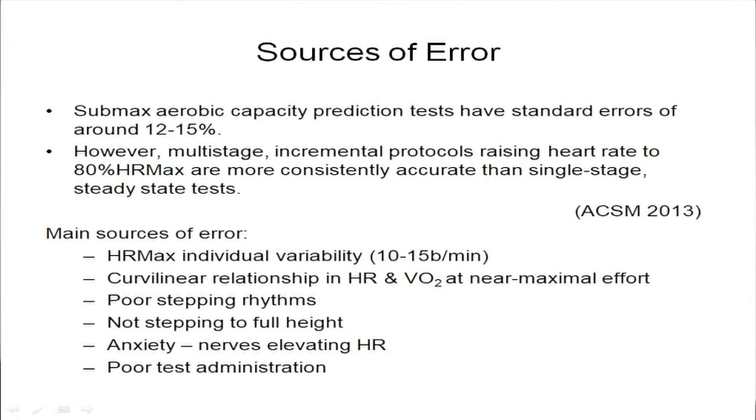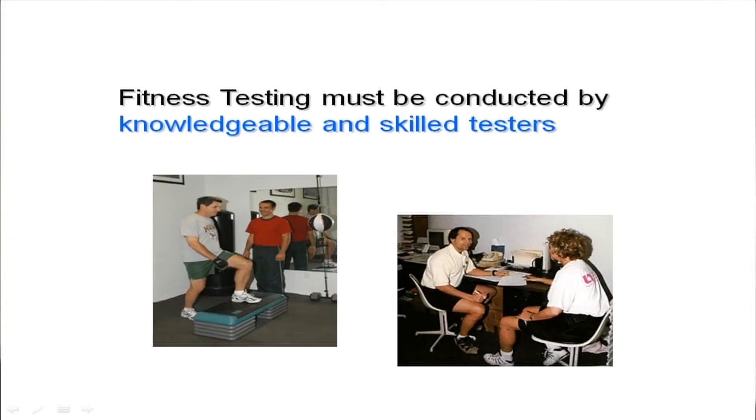Additional sources of error include the curvilinear relationship between heart rate and VO2 at near-maximal effort. But possibly more important are poor stepping rhythms, people failing to keep the correct rhythm, not stepping to full height on the step, anxiety — which can elevate heart rate and give a false result — and also poor test administration. It is vital that the tester knows exactly how to administer the Chester Step Test accurately. The fitness test must be conducted by knowledgeable and skilled testers.